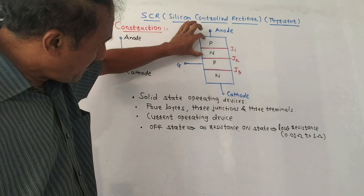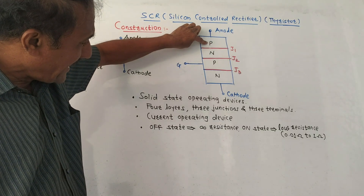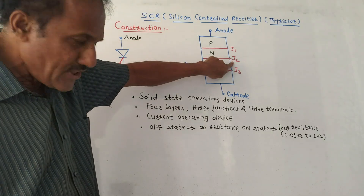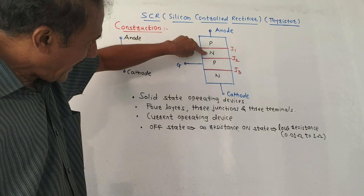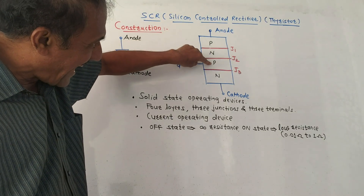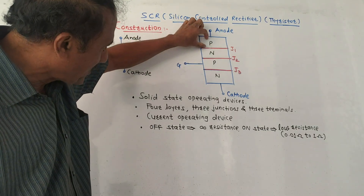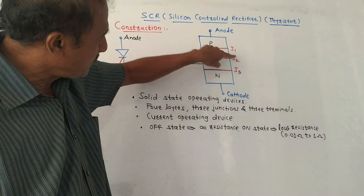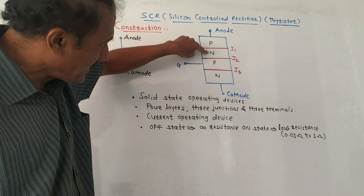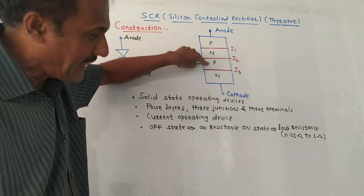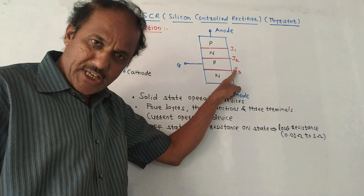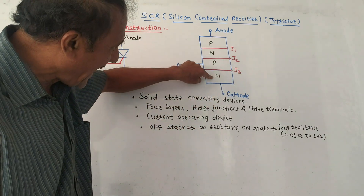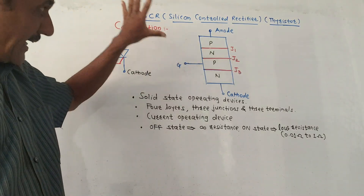Junction J1 is between the first P-layer and first N-layer. Junction J2 is between the first N-layer and second P-layer. Junction J3 is formed between the second P-layer and the last N-layer.